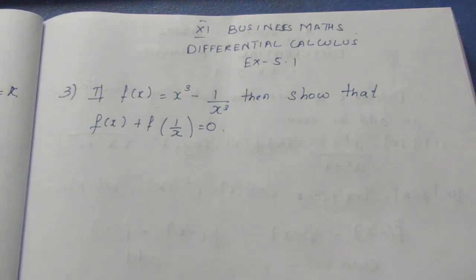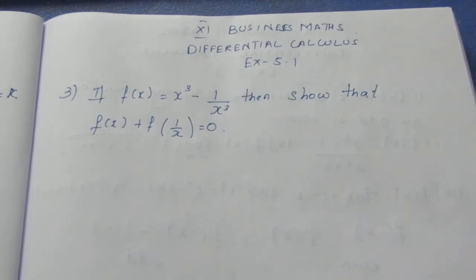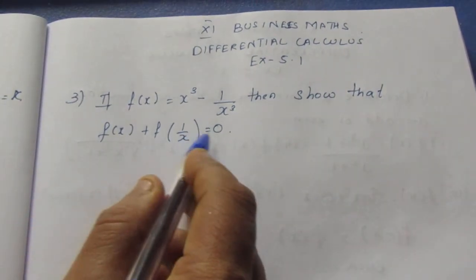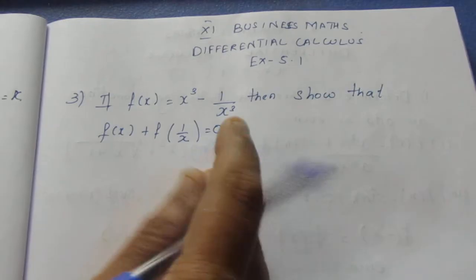Let's see: if f of x is equal to x cube minus 1 by x cube, then show that f of x plus f of 1 by x is equal to 0.